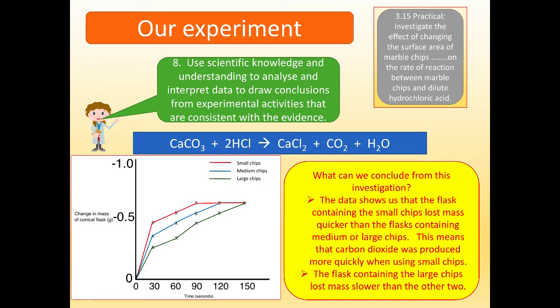Experimental skill number eight: use scientific knowledge and understanding to analyze and interpret data to draw conclusions from experimental activities that are consistent with the evidence. So, what can we conclude in this investigation? Well, the data shows us, first of all, that the flask containing the small chips, shown here in red on the graph, lost mass quicker than the flask containing medium or large chips. This means that carbon dioxide was produced more quickly when using small chips. And we could also say, conversely, the flask containing the large chips lost mass slower than the other two. So, there's our conclusion.